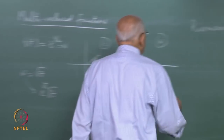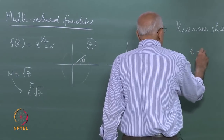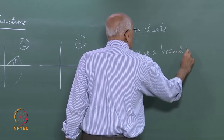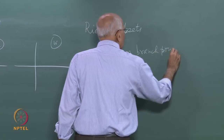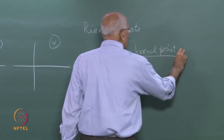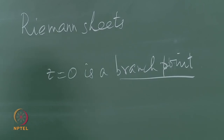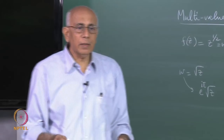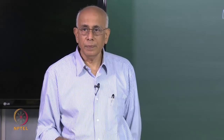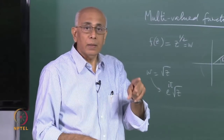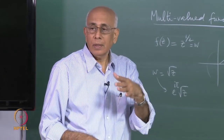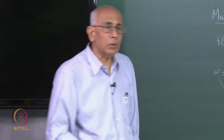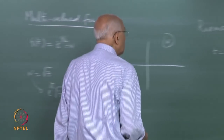So z equal to zero is a branch point for this function. Is there any other branch point? We know that in the extended complex plane there is just one point at infinity. So infinity is another branch point, because whether it is plus infinity, minus i infinity, or i infinity does not matter — there is just one point. The other branch point is at z equal to infinity.